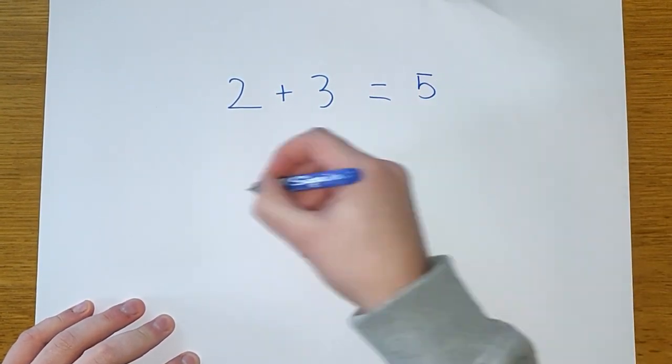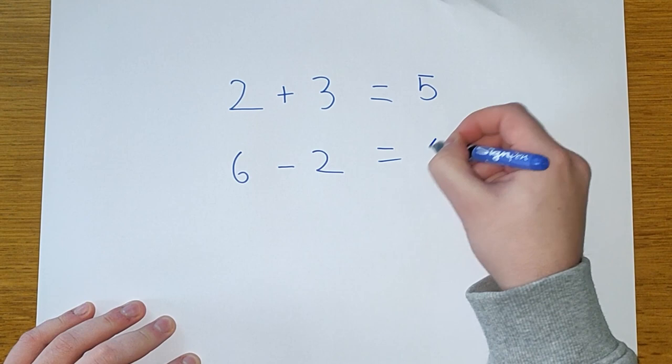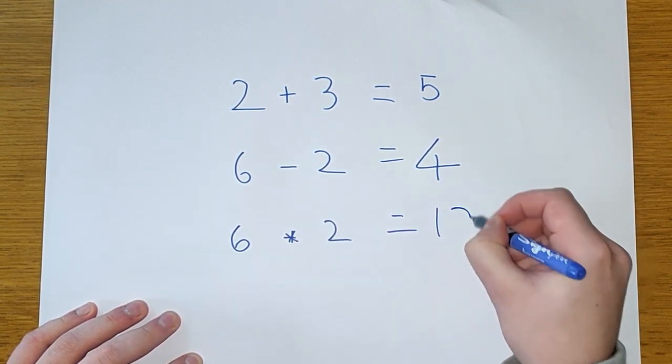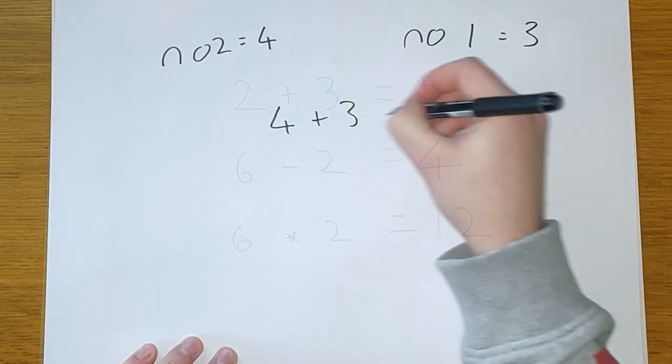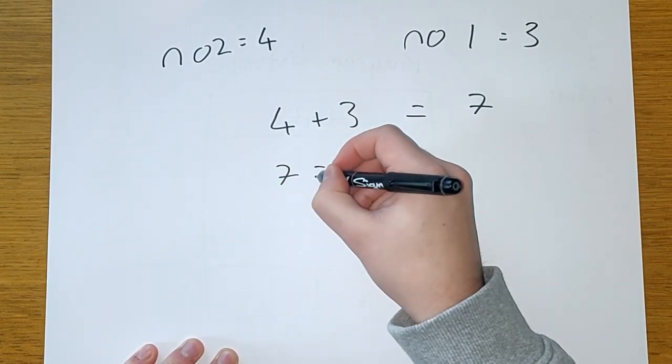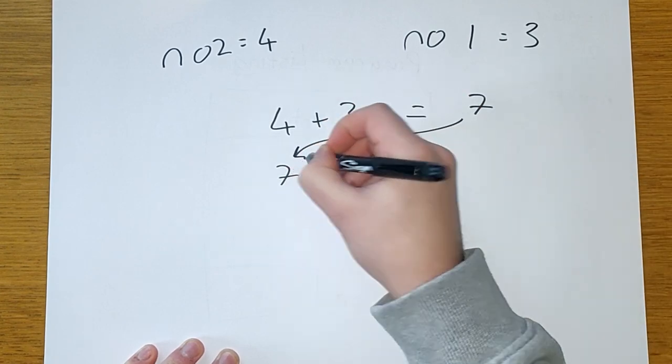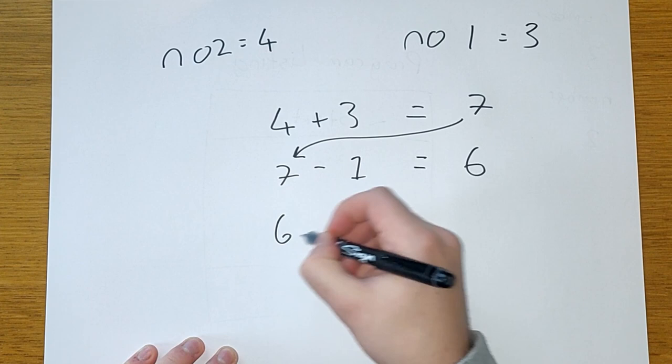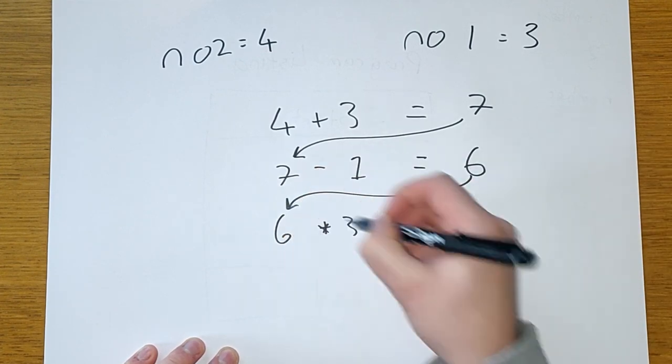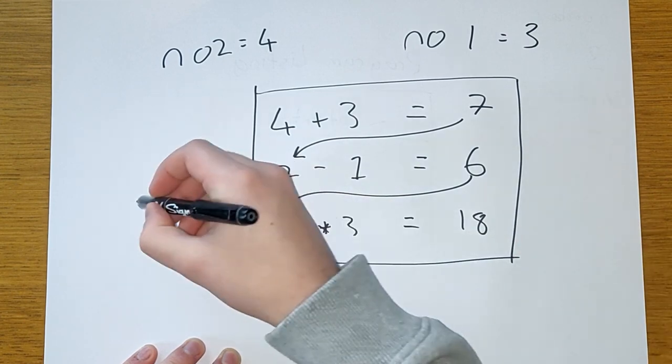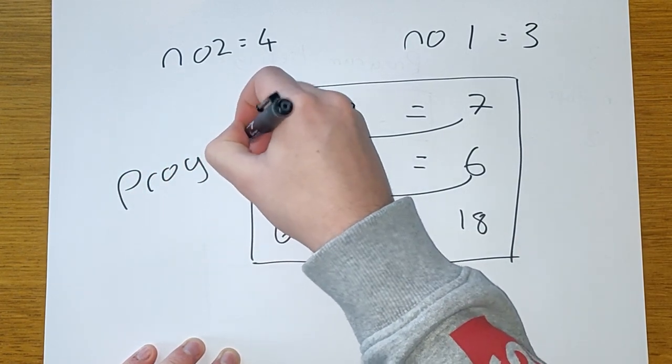For example, we all have a basic understanding of arithmetic operations, like adding two numbers together, multiplying them, or subtracting them from one another. These instructions also exist within assembly languages. Let's say I wanted to add two numbers together, then subtract one from that result, before then multiplying it by three. All I have to do is write a program with the relevant instructions listed in a precise order.